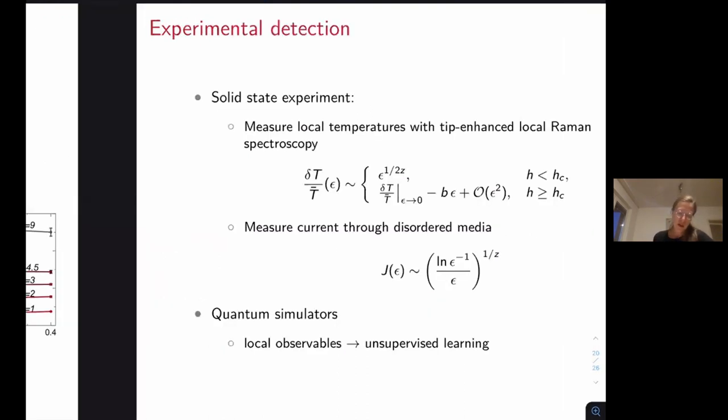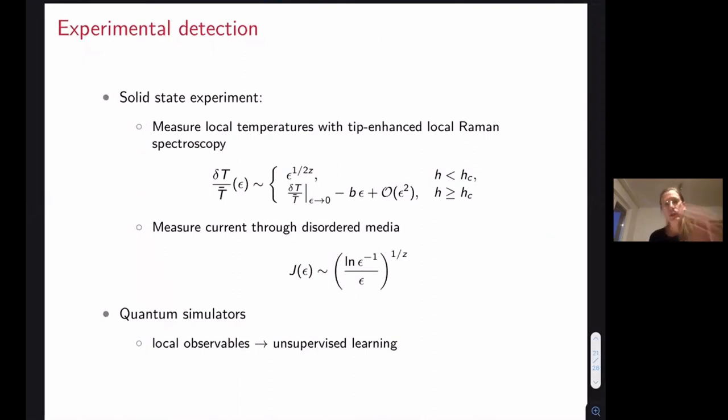Now how would we measure this in experiment? One possible platform would be solid state experiment where we naturally have couplings to phonons, and one would have to add some driving like coupling to light and then measure these local temperatures by doing a local Raman spectroscopy. But not so many experimental groups have such setup that could do this. So another possibility would also be to resort to quantum simulators and then measure many different local observables. So not necessarily try to really measure, I mean in principle this could also be done with solid state experiment if you have access to many local observables, but that's typically easier with quantum simulators.